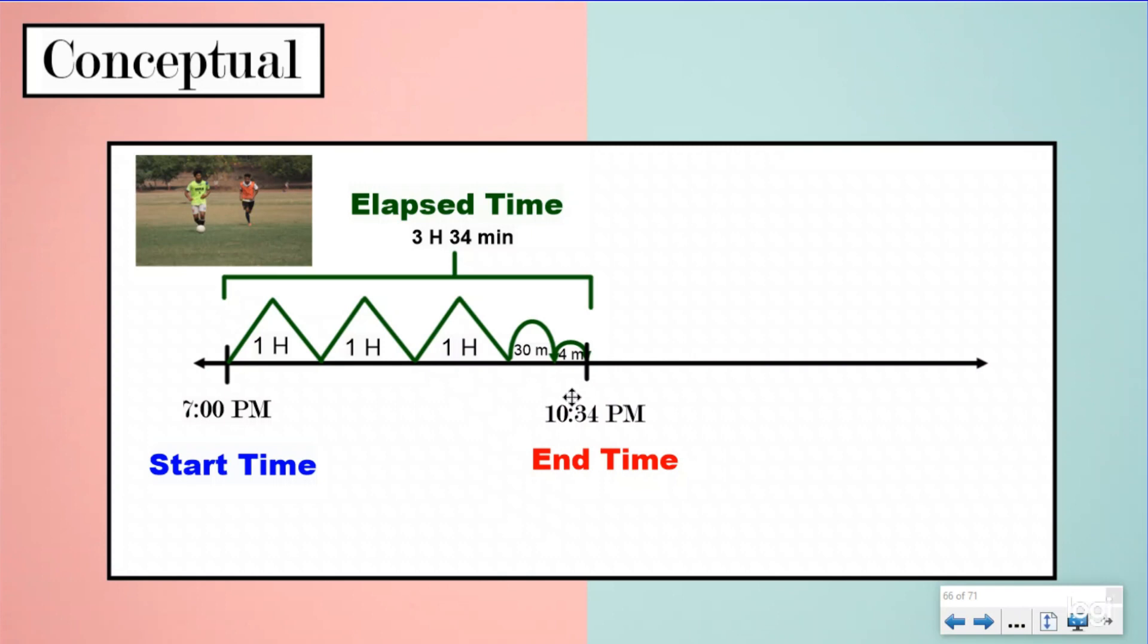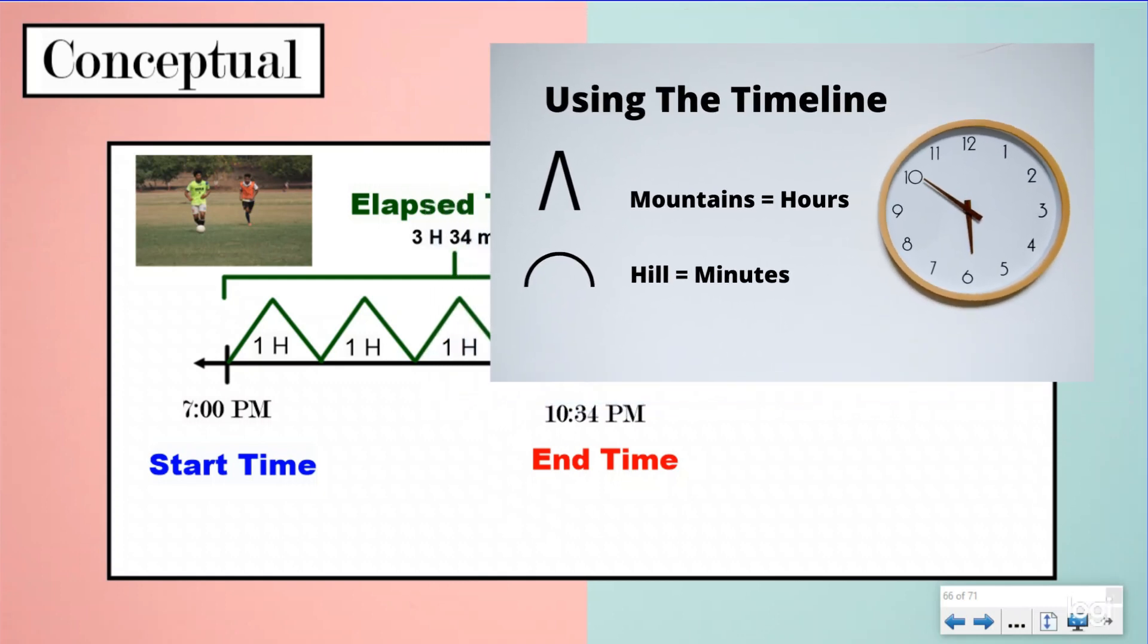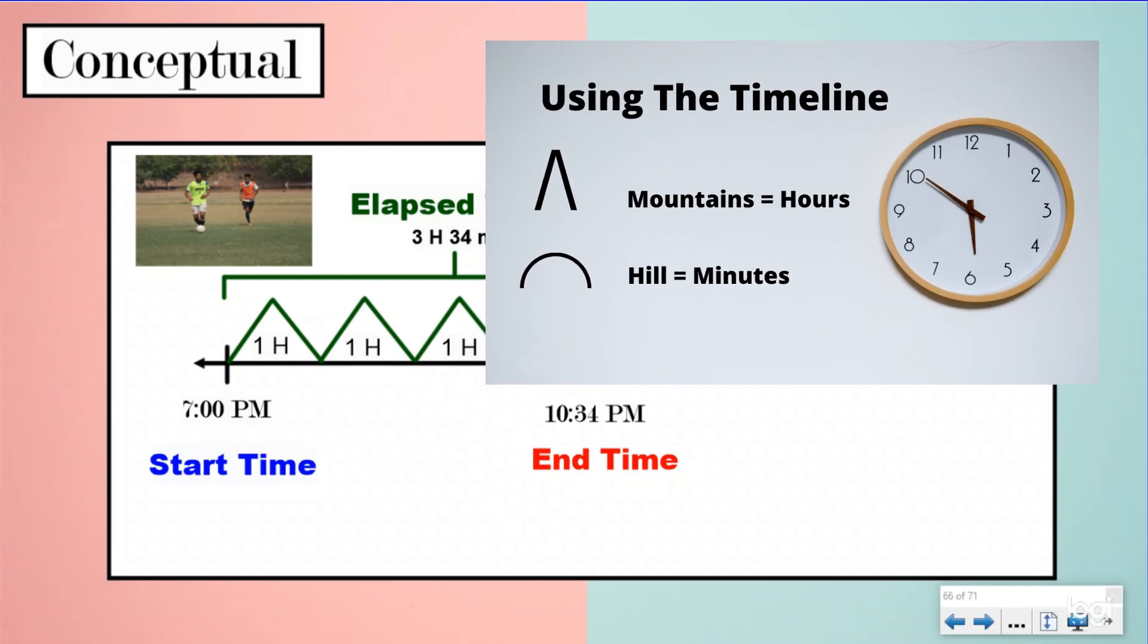So here we have our timeline that we've been looking at during these lessons. If you've been with us for any of our time unit lessons, we love our mountains and hills strategy. So here is how we mark our timeline. Our mountains equal one hour and our hills are our minutes. And they could be one-minute hills, two-minute hills, five-minute hills, 59-minute hills.